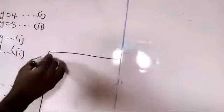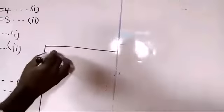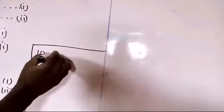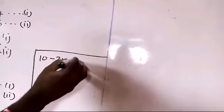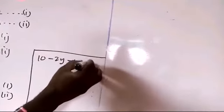Now, opening the bracket, we have 2 times 5, it gives 10, minus 2 times minus y, gives -2y, minus y, equals to 4.